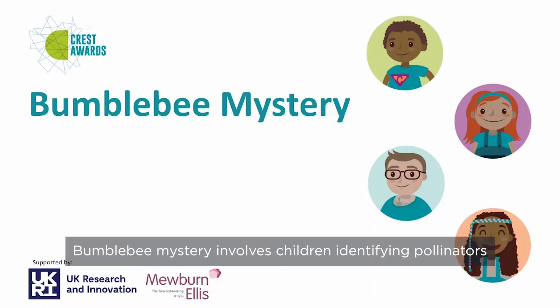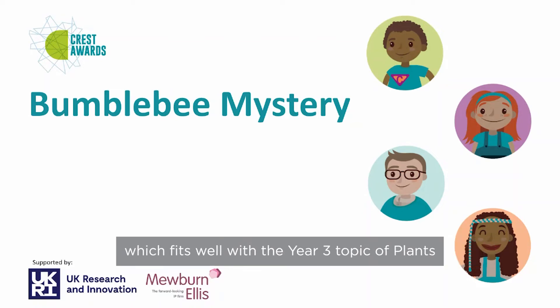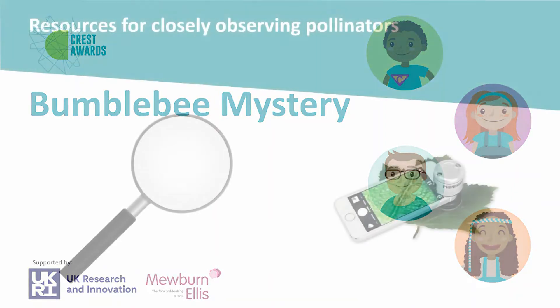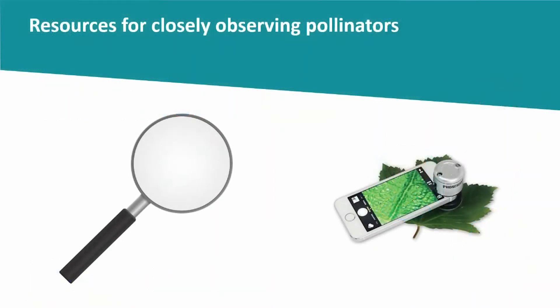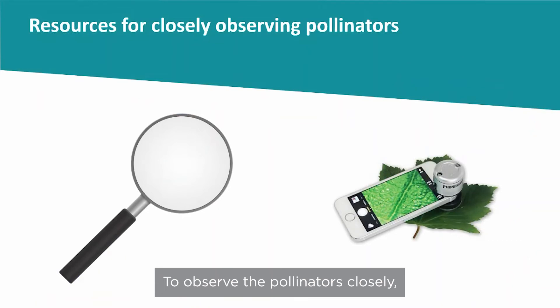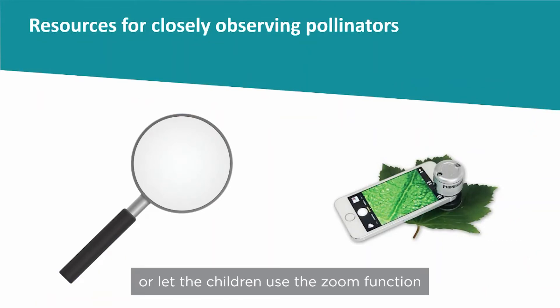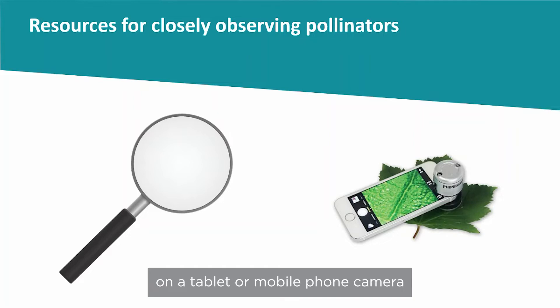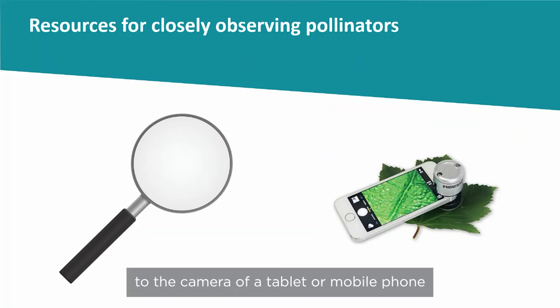The Bumblebee Mystery involves children identifying pollinators, which fits well with the Year 3 topic of plants. To observe the pollinators closely, provide a magnifying glass or let the children use the zoom function on a tablet or mobile phone camera. You can also buy digital microscopes or ones that can be attached to the camera of a tablet or mobile phone.